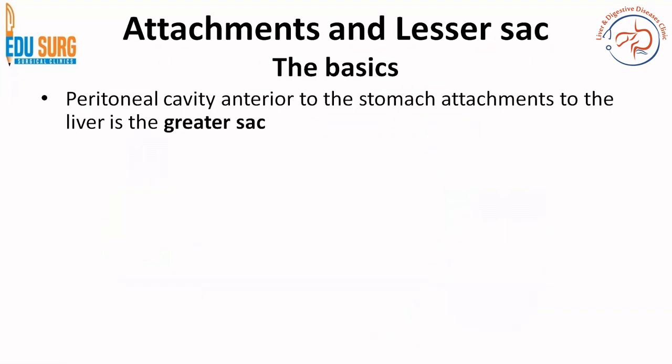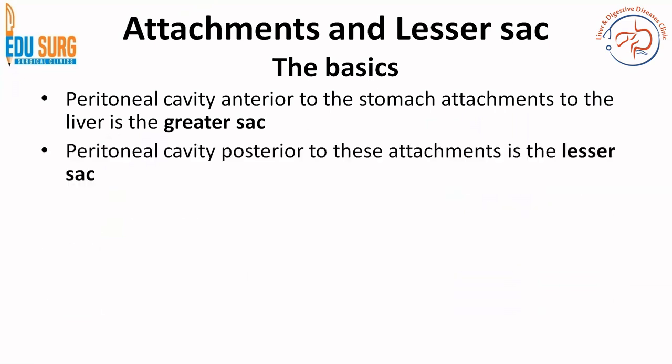Going to the lesser sac — what is the lesser sac? The peritoneal cavity anterior to the stomach attachments to the liver is the greater sac. The major abdominal cavity that we see once we enter the abdomen and open the peritoneum is the greater sac. The peritoneal cavity posterior to these attachments is the lesser sac. So, in simplified terms, what is anterior to these attachments is the greater sac, and the cavity posterior to these attachments is the lesser sac.